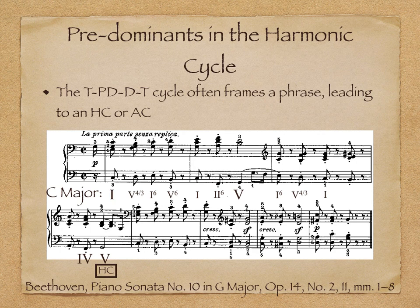Notice that the predominant 2-6 is part of the tonic expansion, just like we have seen with vii°6 and inversions of V7 in other examples. Listen once more to the example and follow along with the analysis, trying to hum the bass line if you can.